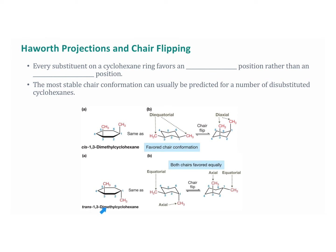In trans-1,3-dimethylcyclohexane, both chair conformations are equally favored because both have one axial and one equatorial. With the chair flip, the axial CH3 group becomes equatorial, and the equatorial one becomes axial. Notice the shift: when you push this up, position one is there, two is here, and three is at the point — everything kind of shifts around one position.